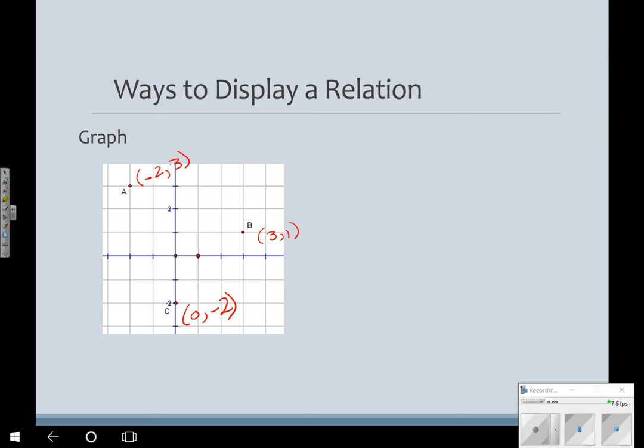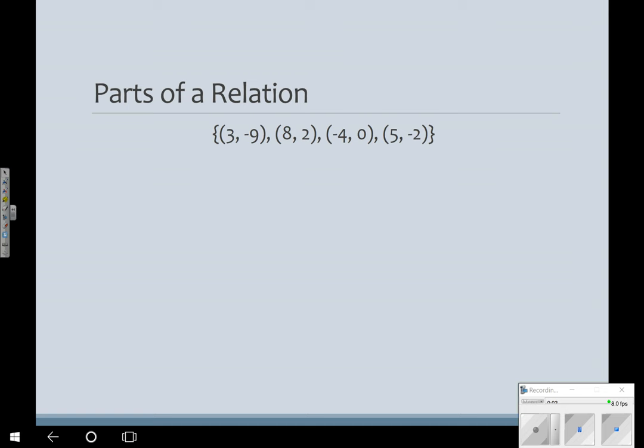We've used an ordered pair, a table, which would probably lead us to believe that we can also display it as a graph. So here is my relation as a graph. Point A is the point (-2, 3). Point B is (3, 1). And point C is (0, -2). Notice that I use parentheses. I'm insisting that you use parentheses when stating ordered pairs.